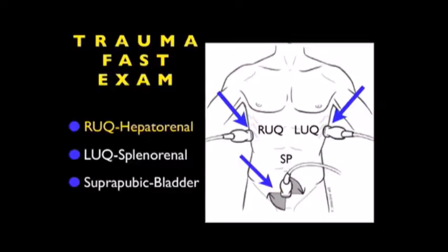In conclusion, this Part 2 module covered the Right Upper Quadrant View of the Trauma FAST Exam. I hope you now have a better understanding of how to perform a complete exam looking at the three areas: infradiaphragmatic, Morrison's pouch, and the inferior tip of the liver. And hopefully you'll now be able to discern the presence of fresh blood versus clotted blood on bedside sonography. I hope to see you back as we move further through the other views of the Trauma FAST Exam.